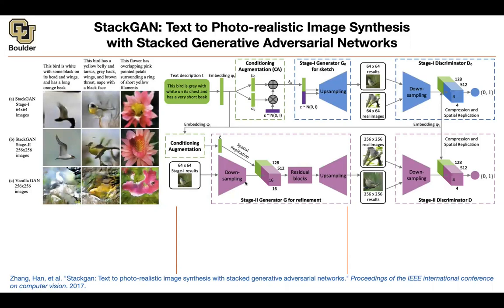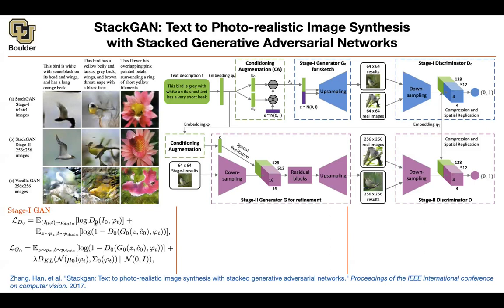You take the image, downsample it, concatenate the outcomes of these two operations together, push them through a residual block, upsample to 256 by 256, and then you have a discriminator operating at higher resolution telling you real versus fake.